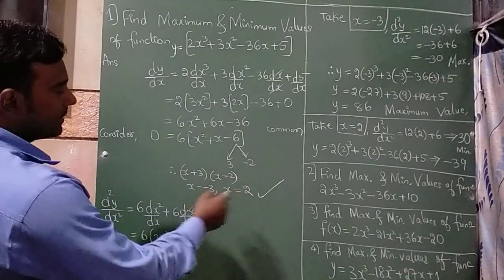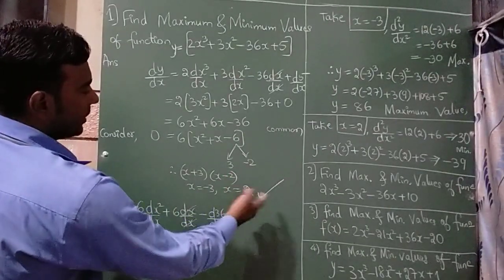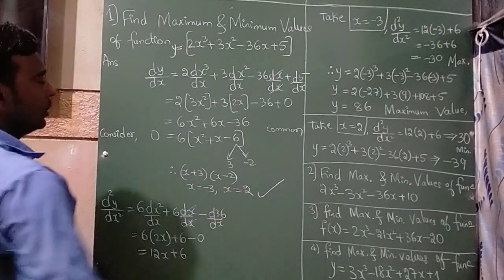Take this 3 on the right hand side, it will go minus 3, and take this minus on the right hand side, you will get x = 2.